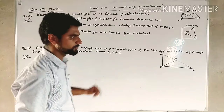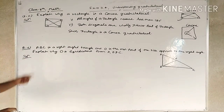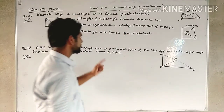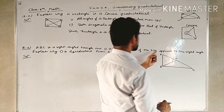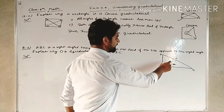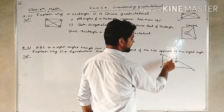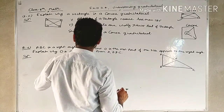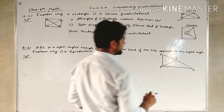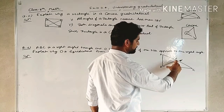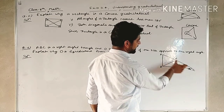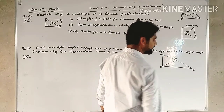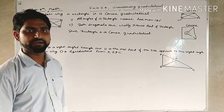Next question: ABC is a right angle triangle. O is the midpoint of the side opposite to the right angle. We need to show that O is equidistant from A, B, and C — that is, the length of OB, OA, and OC are all equal.